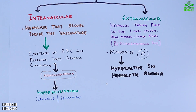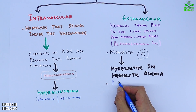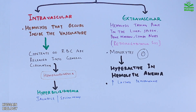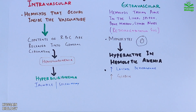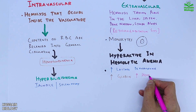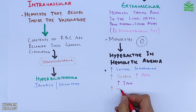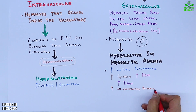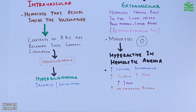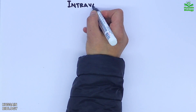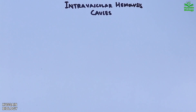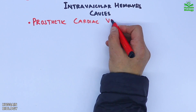In extravascular hemolysis we see an increase in lactate dehydrogenase enzyme, and increases in the concentration of globin molecules, heme molecules, iron molecules, and unconjugated bilirubin.